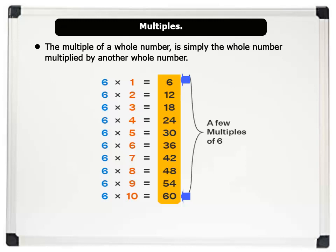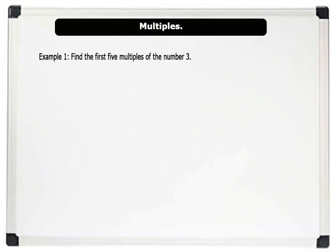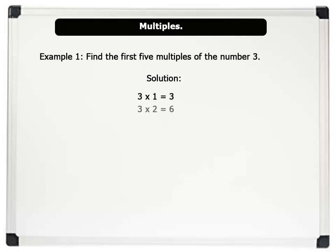Let us solve some problems. Example 1: Find the first 5 multiples of the number 3. Solution: 3 times 1 equals 3, 3 times 2 equals 6, 3 times 3 equals 9, 3 times 4 equals 12, and 3 times 5 equals 15.